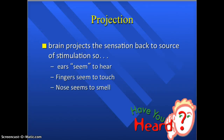Projection is when your brain projects the sensation back to the source of stimulation. At the same time a sensation forms, the cerebral cortex interprets it to seem to come from the receptors being stimulated, so you're determining where all those sensations are starting from. For example, if you're eating an apple, your fingers seem to touch the apple, your nose seems to smell the apple, and your ears seem to hear you crunching it, so all the stimuli are projected back to their source.